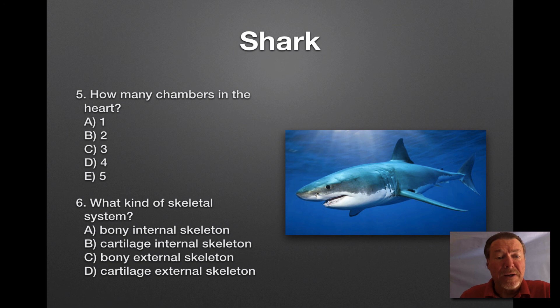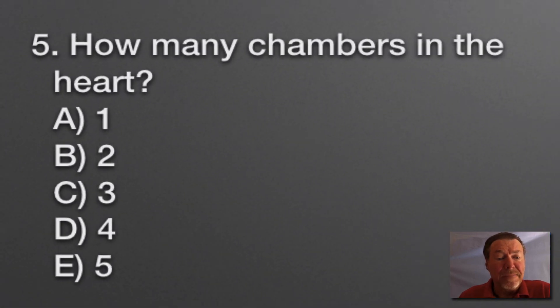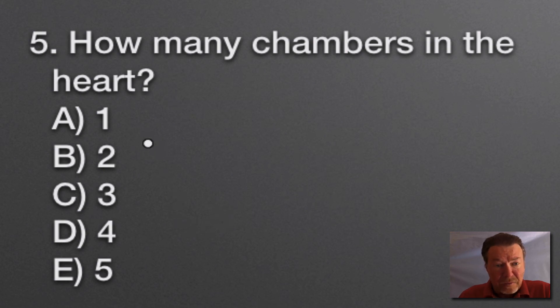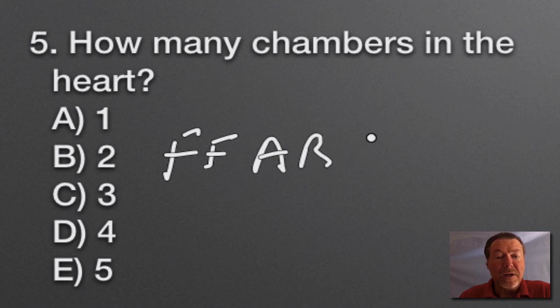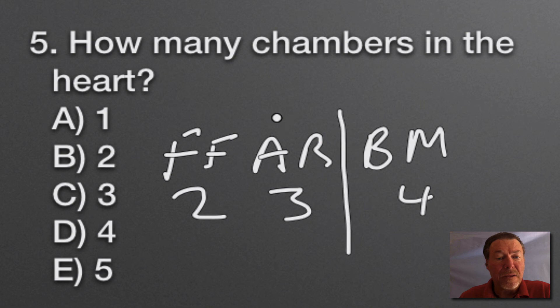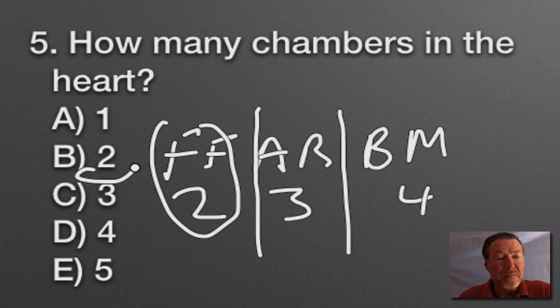Same specimen, next two questions. How many chambers in the heart? Fish have two, amphibians and reptiles have three, and birds or Aves and mammals have four. So it's two for these two, three for these, and four for those. This is Chondrichthyes, a fish, so the answer is two, answer B.